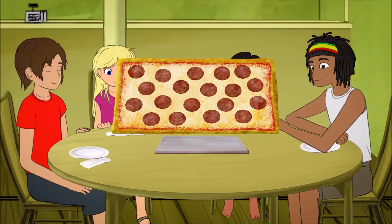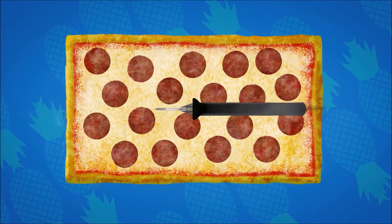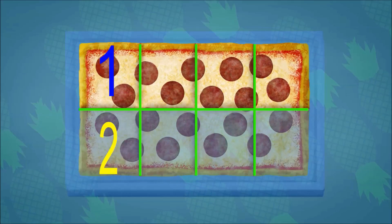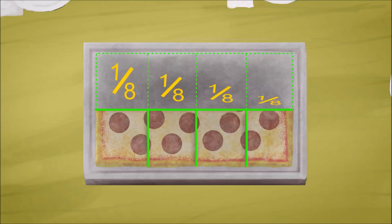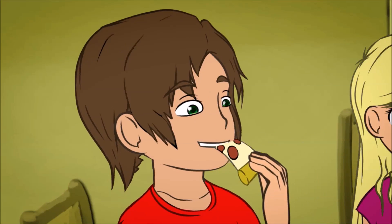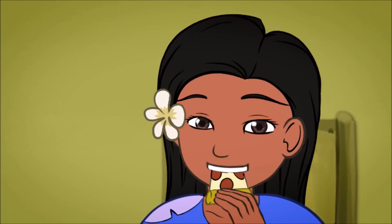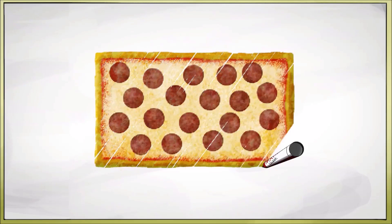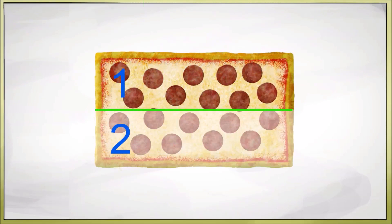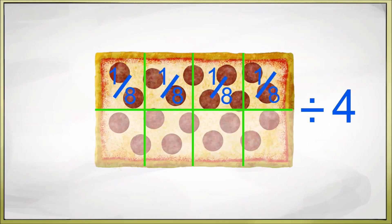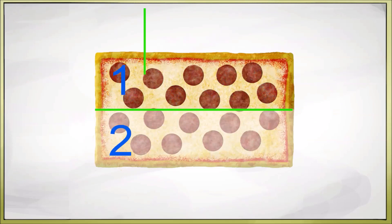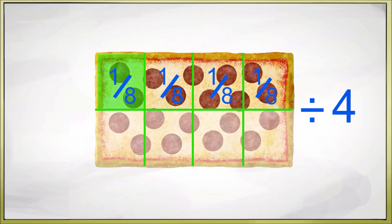Prince sat down at a pizzeria and shared one-half of a pizza. One-half divided by four is one-eighth — that's the amount of pizza each of them ate. Draw one whole pizza and then the fraction, divide it by the whole number, and find the quotient.